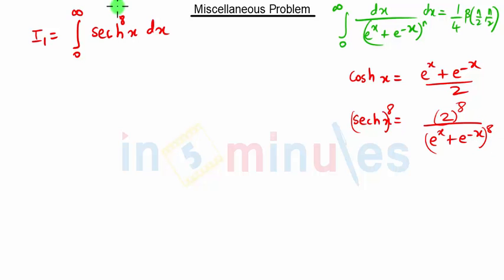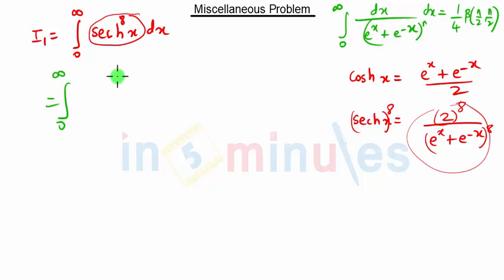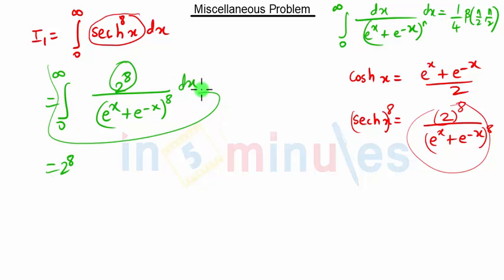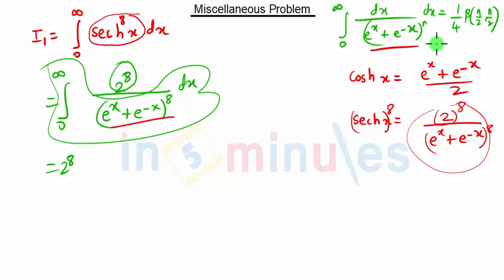So sech(x) raised to 8 can be replaced by that expression. We have integration from 0 to infinity of 2 raised to 8 upon (e raised to x plus e raised to minus x) the whole raised to 8 dx. We can take 2 raised to 8 outside, leaving only the integral of the denominator term. Comparing this equation with our proved formula, both are similar with n equal to 8.